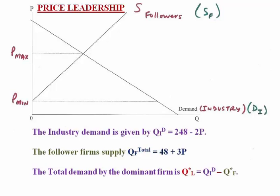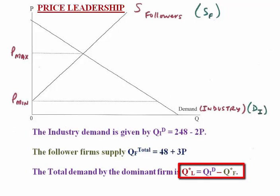The model of price leadership includes a dominant firm and follower firms. The first graph shows the supply of the followers and the demand by all of the customers in that market. We will now attempt to derive the leader's or the dominant firm's demand curve as the difference between the industry demand and the followers' supply.